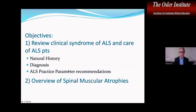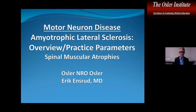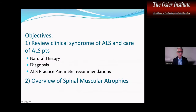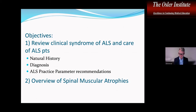Our objectives are to review clinical syndromes of ALS and care of ALS patients. We're going to talk about natural history and diagnosis, and as I mentioned, we'll talk about the ALS practice parameter recommendations, and then we'll give an overview of spinal muscular atrophies.